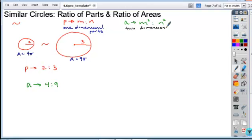Notice that here our powers are one for one-dimensional parts. Here our powers are two for two-dimensional pieces, or elements, the areas.